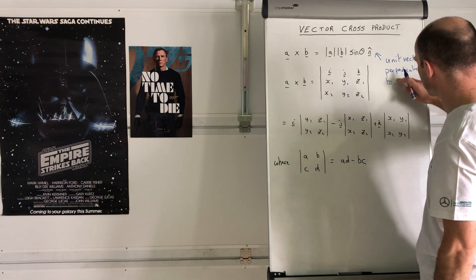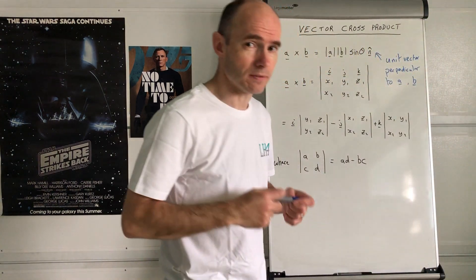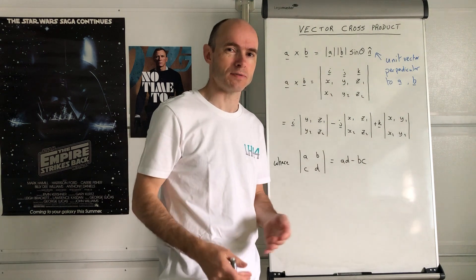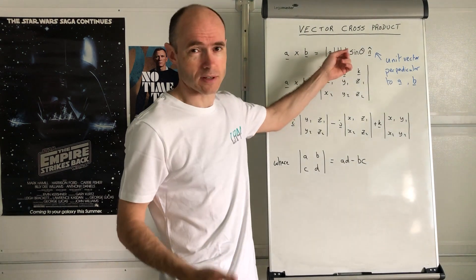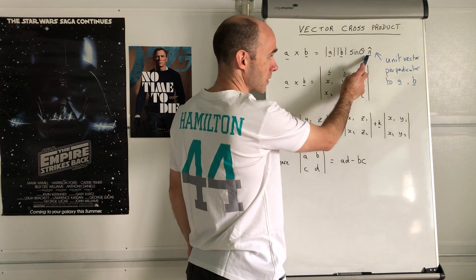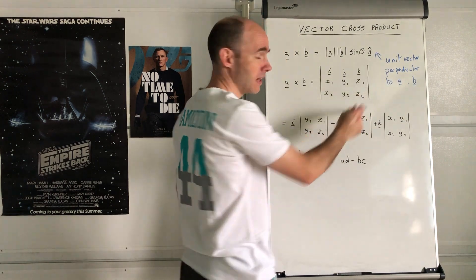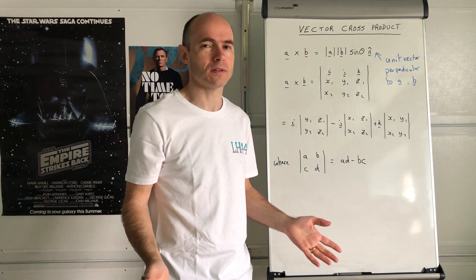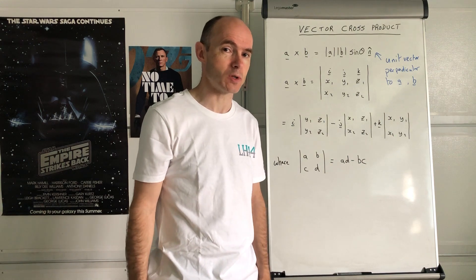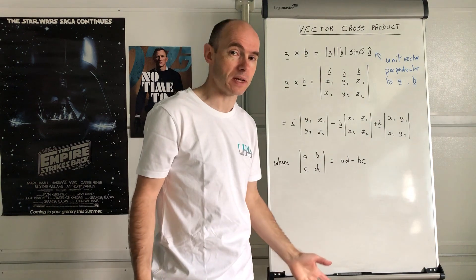It's a unit vector perpendicular to A and B. For what I'm going to go through, you don't really need to know that in detail, but I'm putting it in there in case you do a Google search of 'vector product', because that's the first thing you're going to see. The important thing is that it gives you a vector that's perpendicular to A and B — that's the whole point of the vector cross product. The scalar product enables you to find the angle of intersection between two vectors; this enables you to find a vector that's perpendicular to two other vectors.